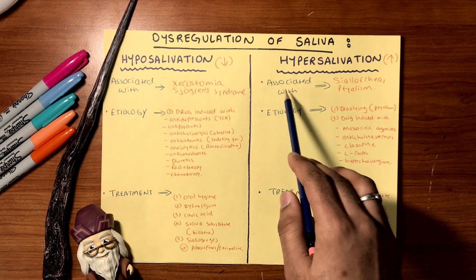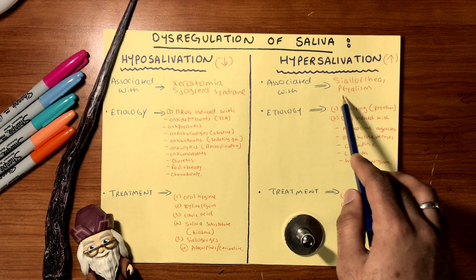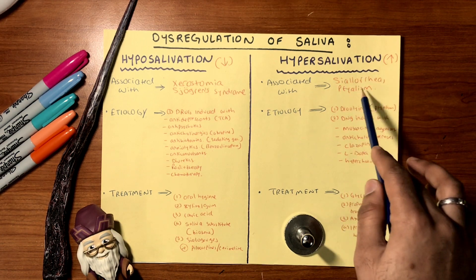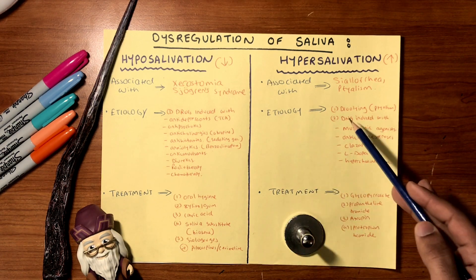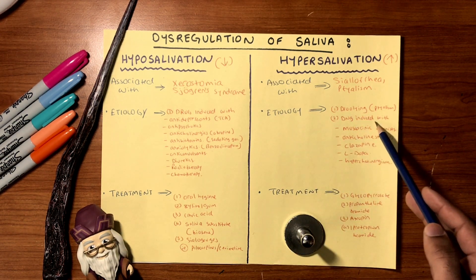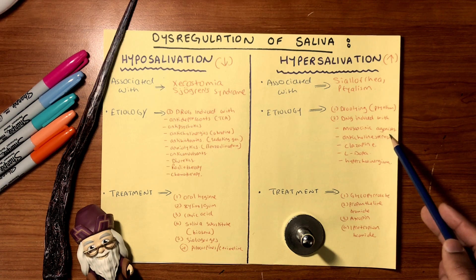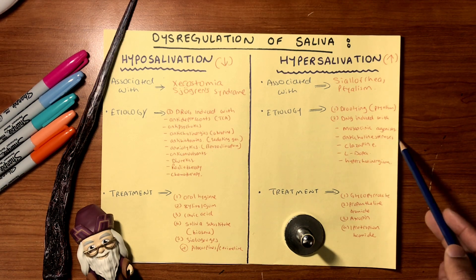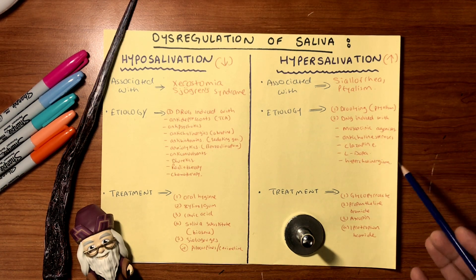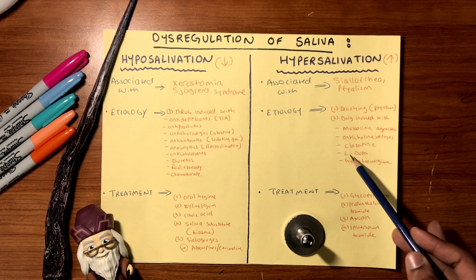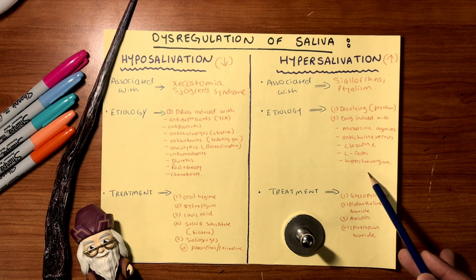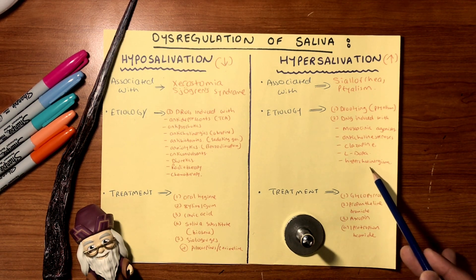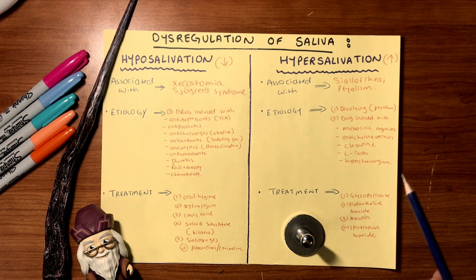Hypersalivation is the opposite — an increase in salivary flow or production, associated with sialorrhea or ptyalism, basically drooling. The etiology includes drooling, and drug-induced causes such as muscarinic agonists, anticholinesterases — which increase acetylcholine activity — clozapine, L-dopa (dopamine), and hypercholinergism, where applying a lot of cholinergic drugs increases all secretory functions including saliva.